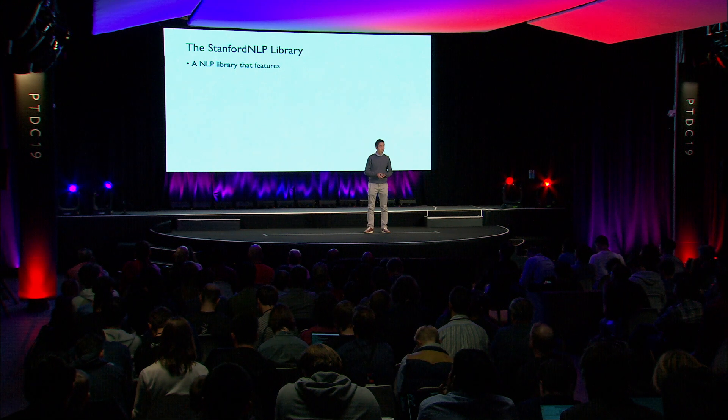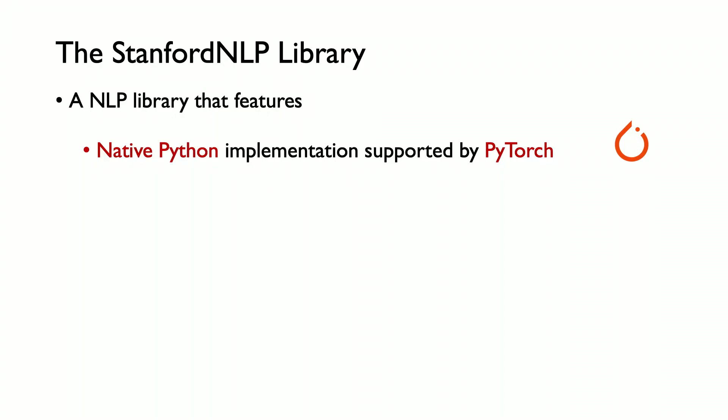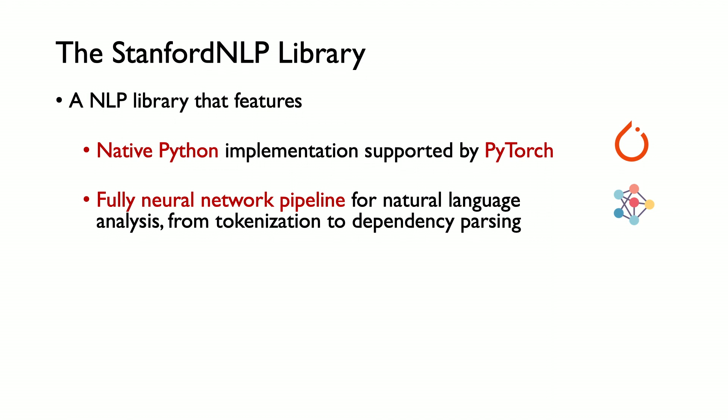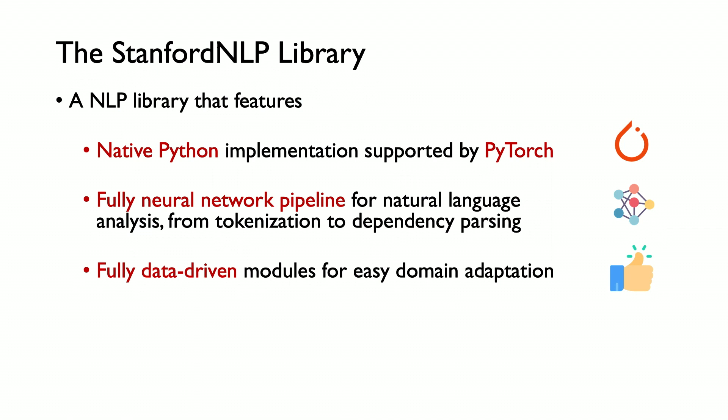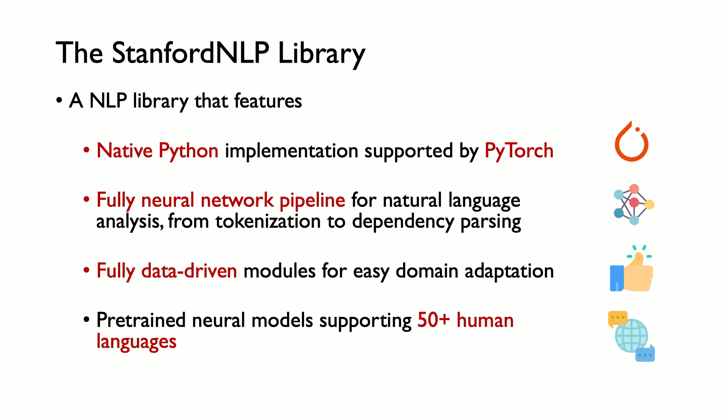To overcome these limitations, we've created the Stanford NLP library. It has the following properties: first, it features native Python implementations of all its modules, supported by the PyTorch framework. Second, it features a fully neural network pipeline for natural language analysis, ranging from tokenization to part-of-speech tagging to dependency parsing. Third, it was created in a fully data-driven fashion that makes domain adaptation much easier. And lastly, we ship pre-trained neural network models that support over 50 human languages, and the number is still growing.